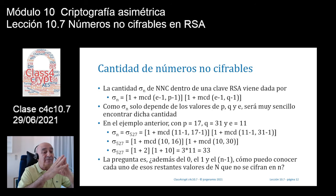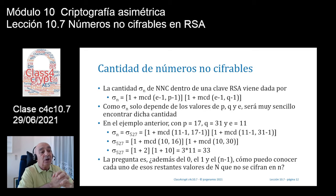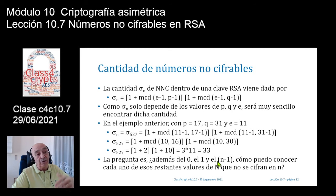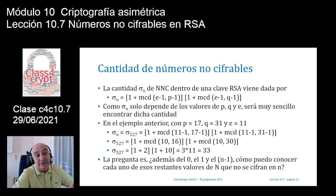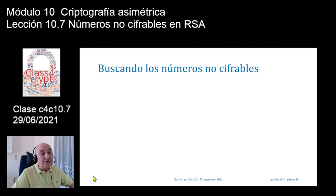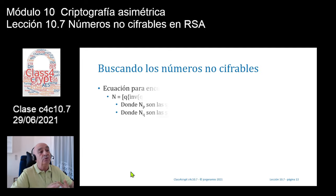He encontrado una parte de la solución: ya sé la cantidad que tengo, que no es el mínimo sino el número 33. Pero ahora lo que me interesa saber es cuáles son. Sé que el 0 y el 1 van en claro, y también sé que el N-1 va en claro, pero debo encontrar todo lo demás: los restantes 30 valores que van en claro.